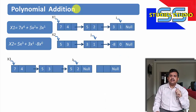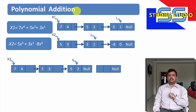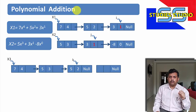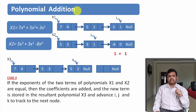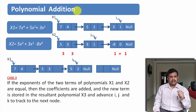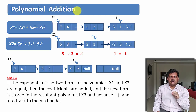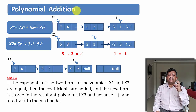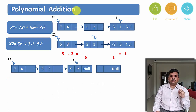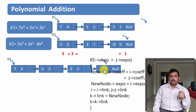Now i is pointing to 3x to the power 1 and j is also pointing to 3x to the power 1. I check both exponents and find they are equal — this is Case 3. When the exponents are the same, I take both coefficients, add them together, and write the result in the new term. So the new term is 6x to the power 1. Then i, j, and k are all incremented to their next terms.